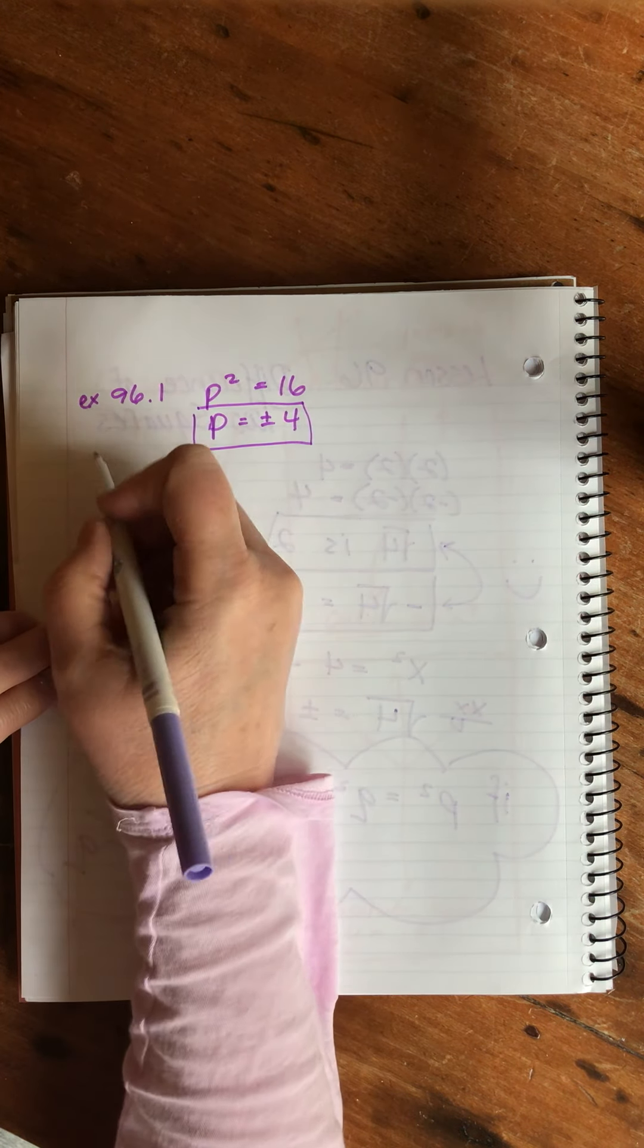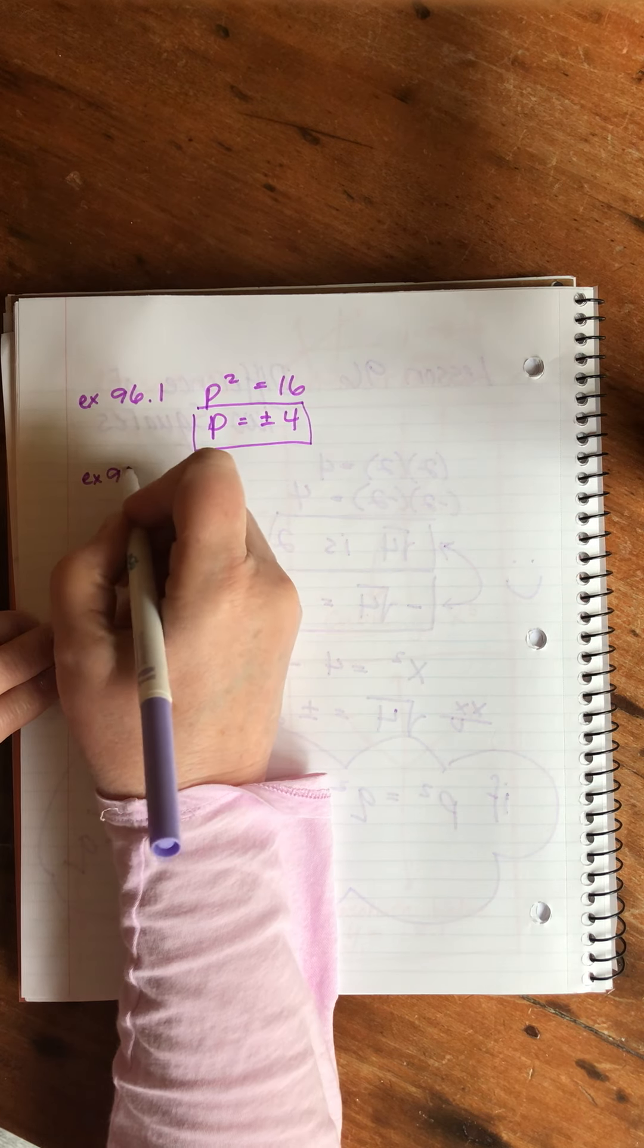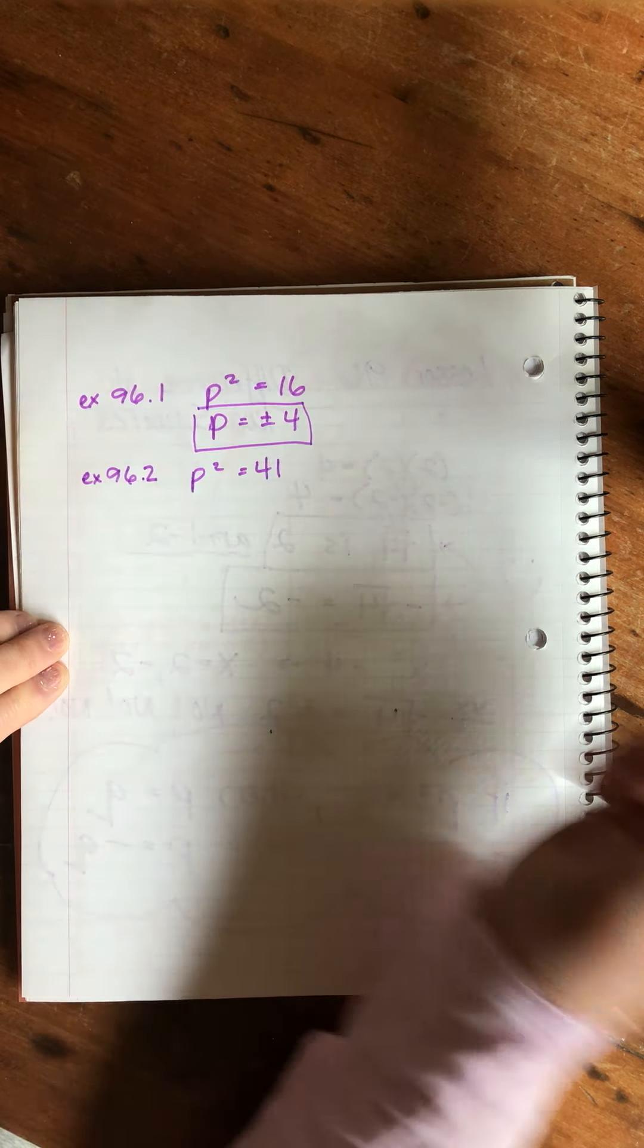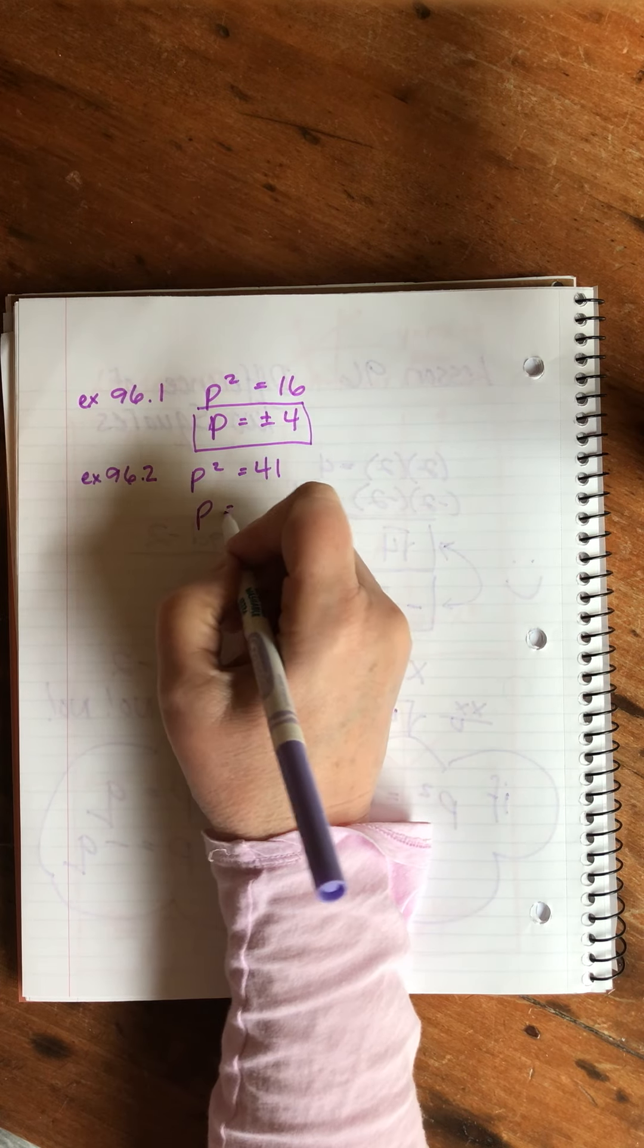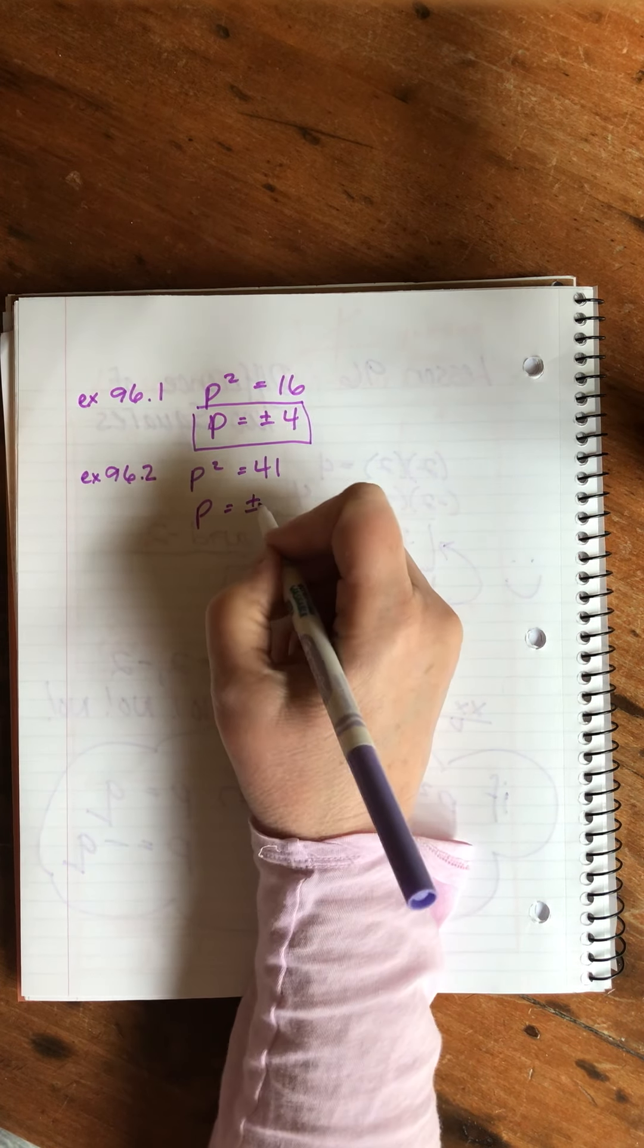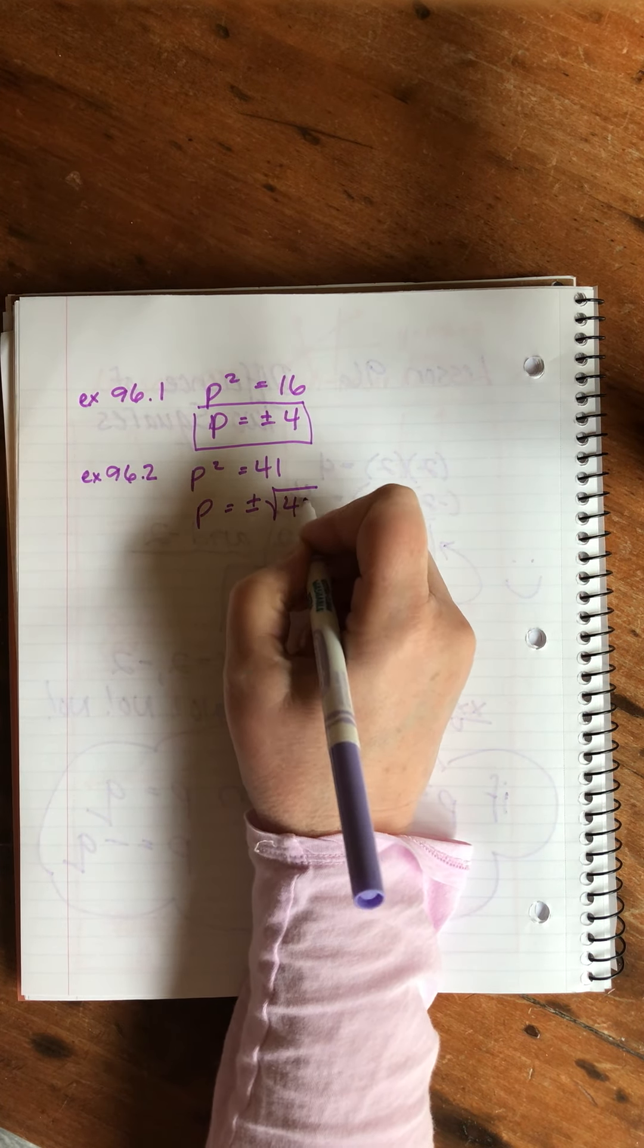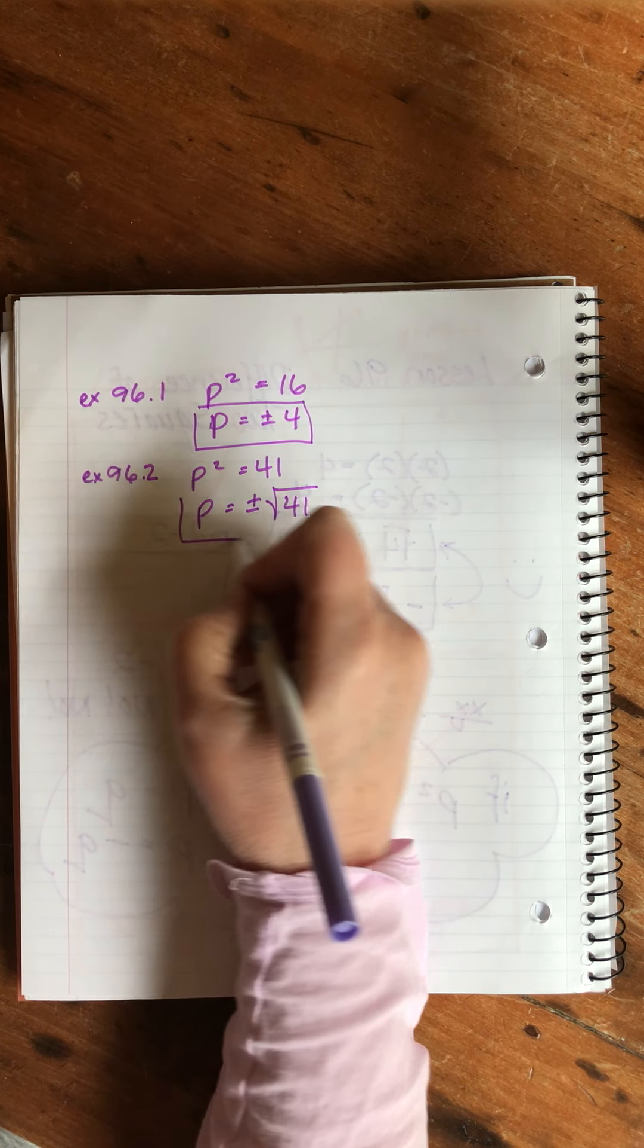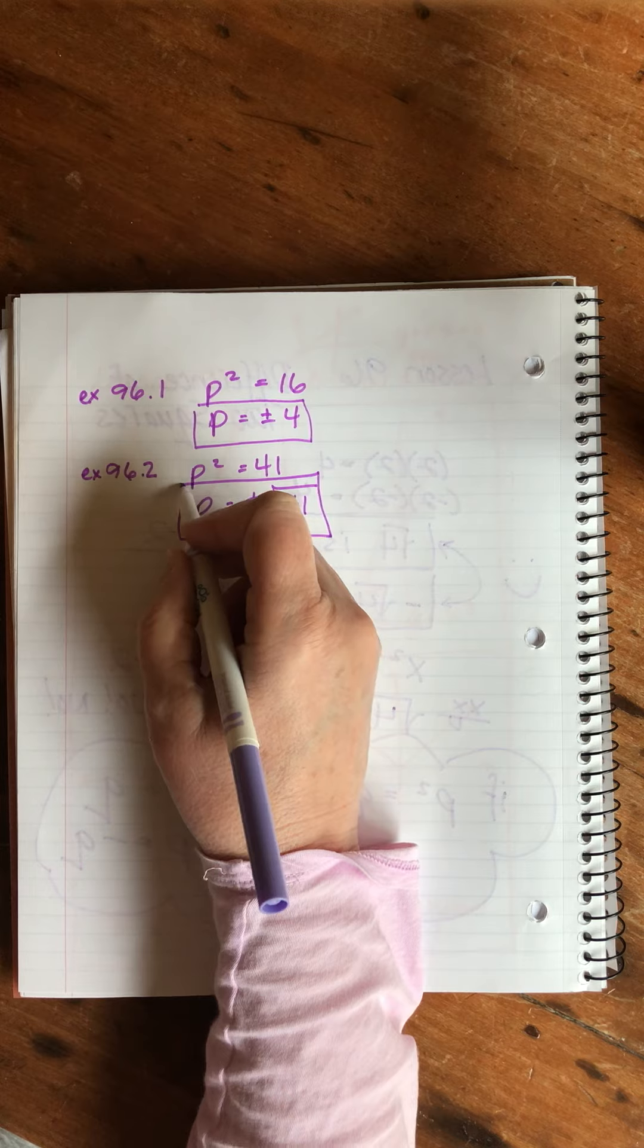Example 96.2: p squared equals 41. Wait a minute, 41 is not a perfect square, so how are we going to write that? Ready? P equals positive or negative square root of 41.